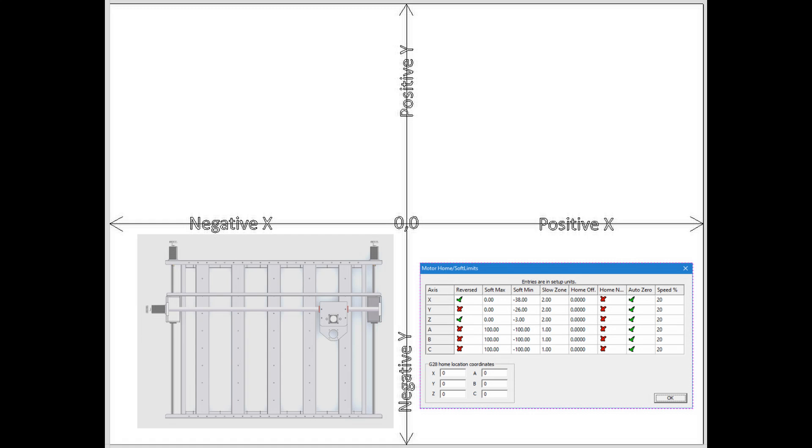For my soft limits, this machine can move the x-axis 38 inches in the negative direction from the home zero before it will run into the side of the upright. Likewise the y-axis can move 26 inches in the negative direction before hitting the front of the machine frame. You'll see these negative values in the soft min column.